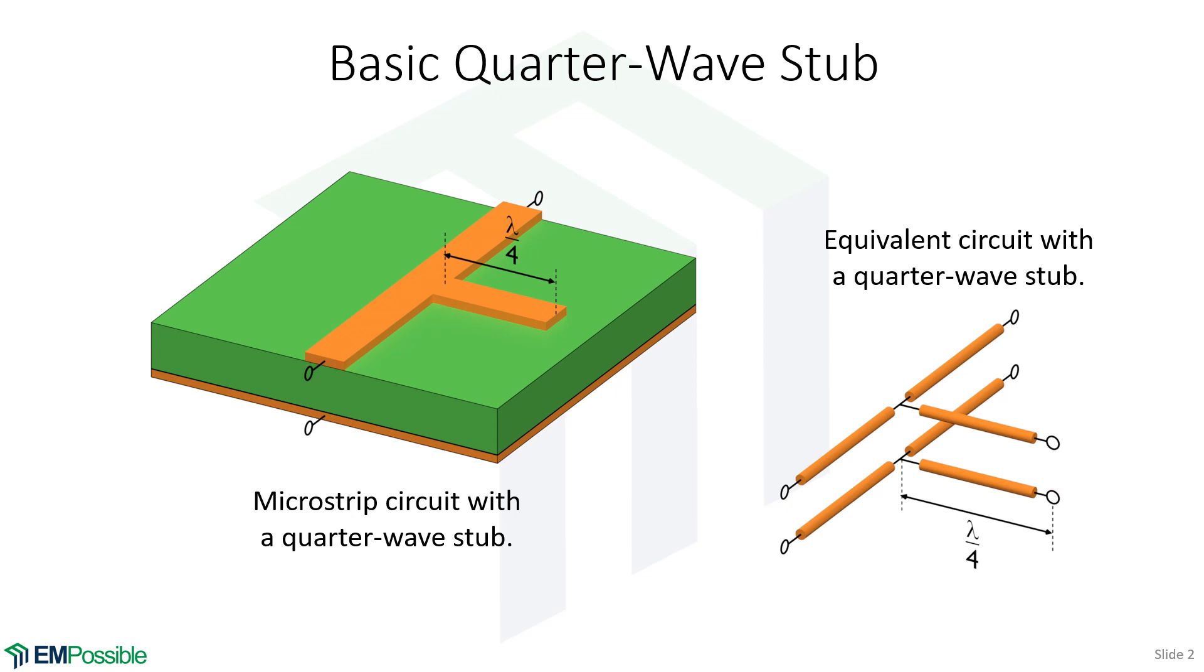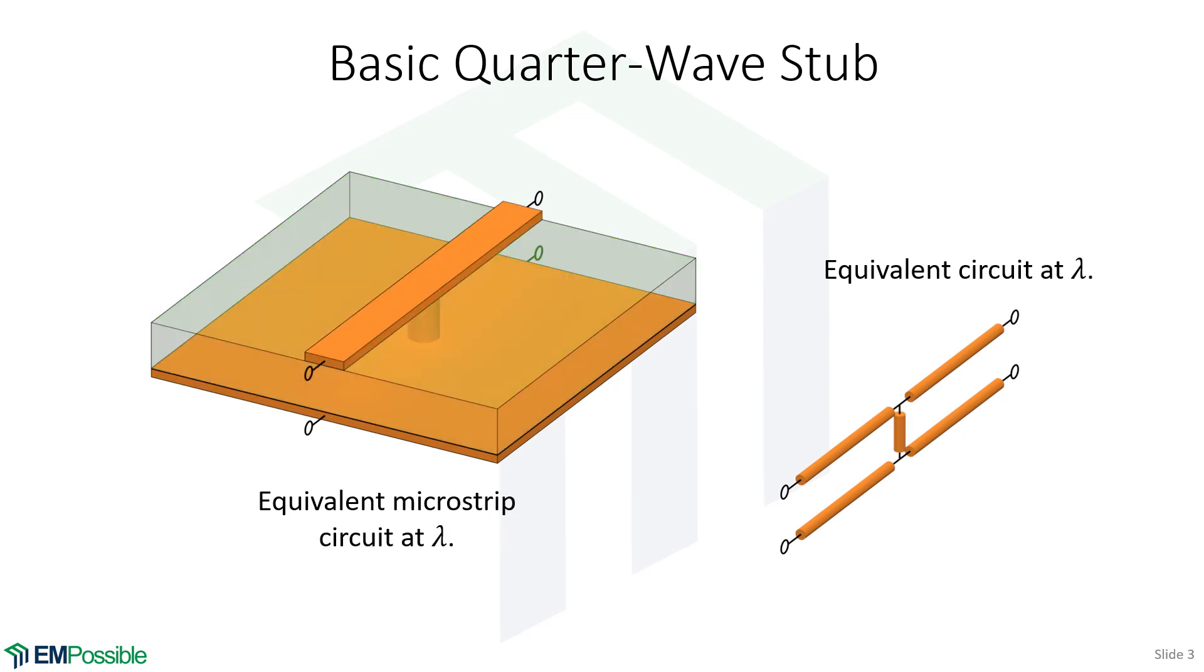And so then we have to ask ourselves, what does an open circuit look like a quarter wavelength away? And in fact, the answer is, it looks like a short circuit. So that's our next picture, the equivalent circuit, a quarter wavelength away makes it look like a short circuit.